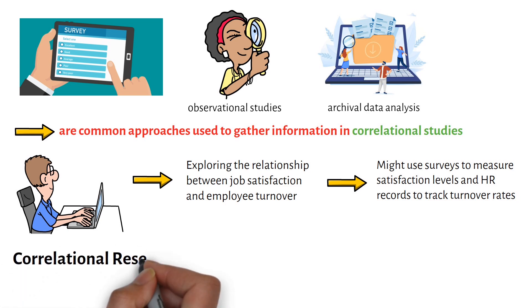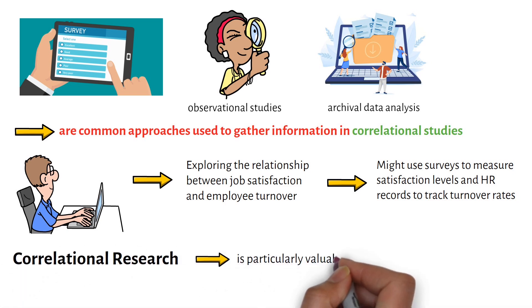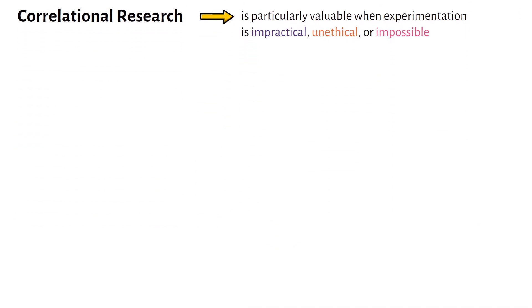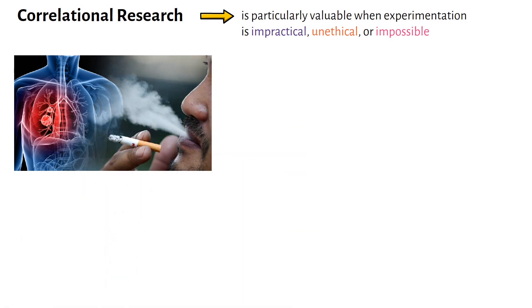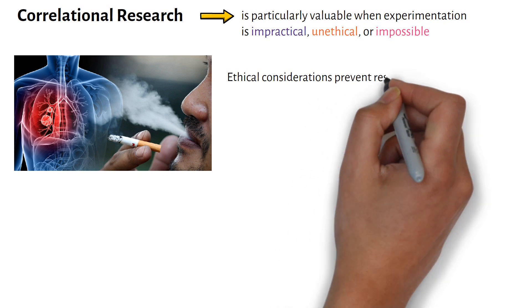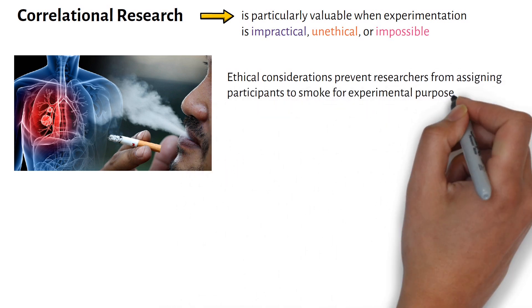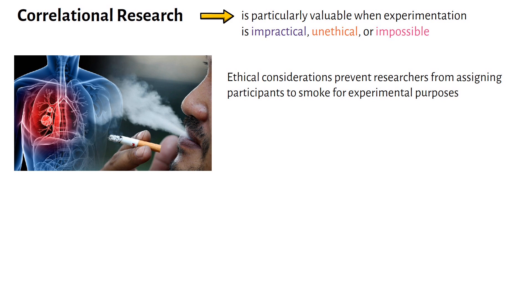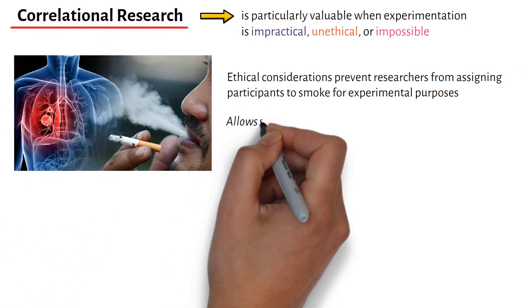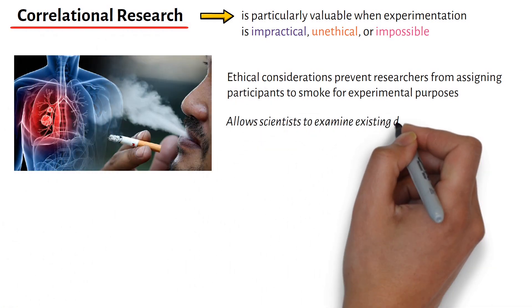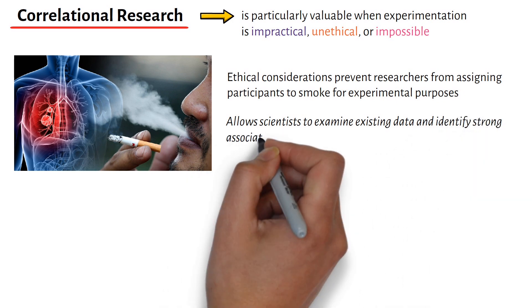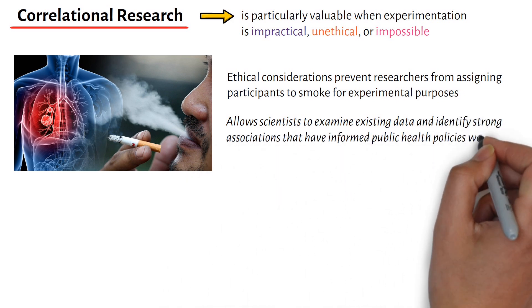Correlational research is particularly valuable when experimentation is impractical, unethical, or impossible. Consider the relationship between smoking and lung cancer. Ethical considerations prevent researchers from assigning participants to smoke for experimental purposes. However, correlational research allows scientists to examine existing data and identify strong associations that have informed public health policies worldwide.